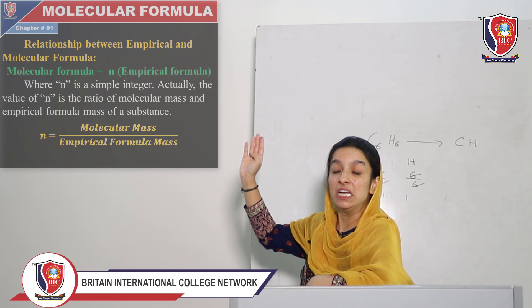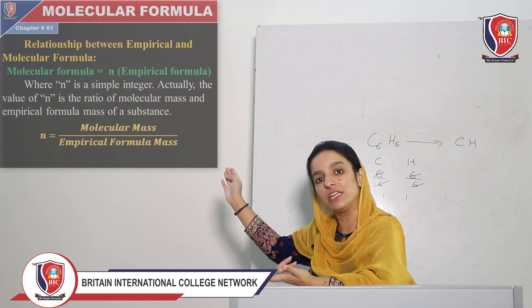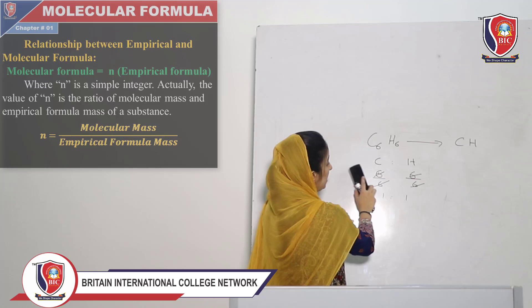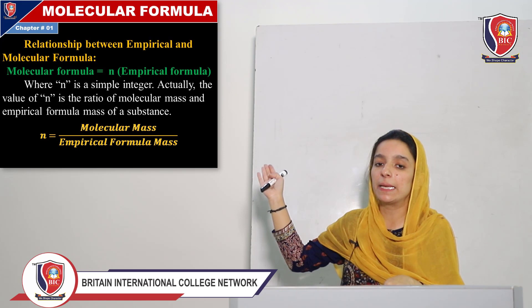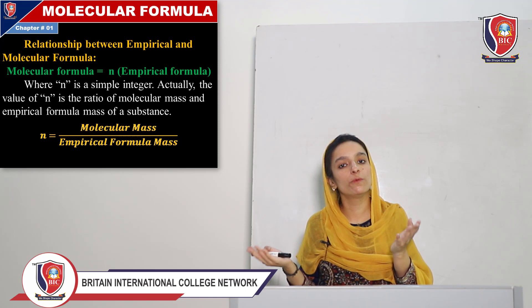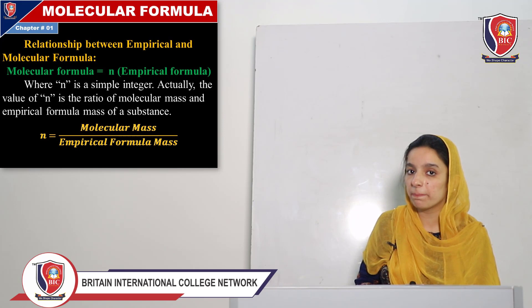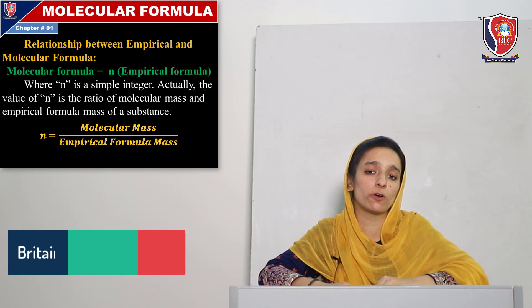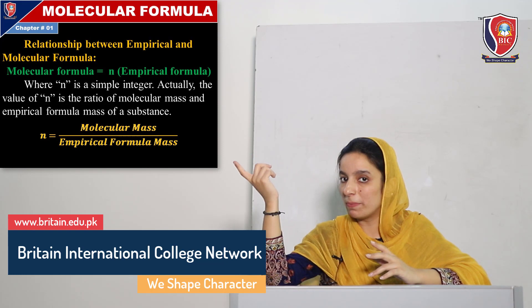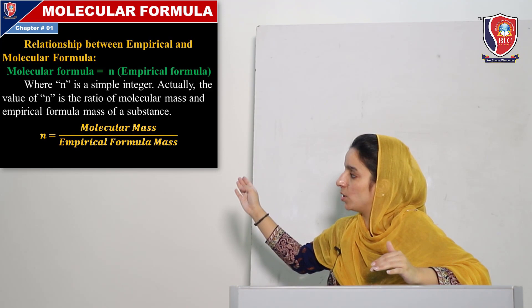Here n is a simple integer. The simple integer n is calculated as: n is equal to molecular mass over empirical formula mass. This relationship between empirical and molecular formula can also form a short question. If asked about the relationship, write: molecular formula is equal to n empirical formula, where n is the simple integer equal to molecular mass over empirical formula mass.